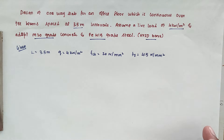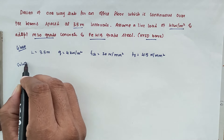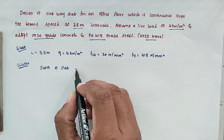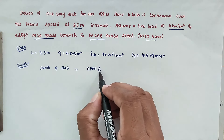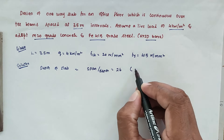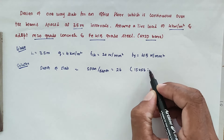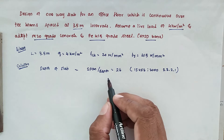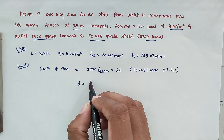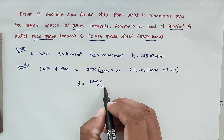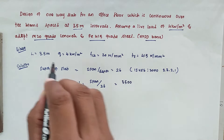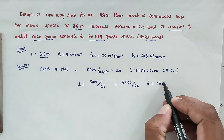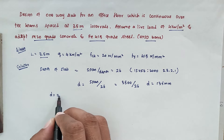Now we have to find the depth of slab. First, depth of slab: assume span by depth equal to 26, as per IS 456:2000 clause 23.2.1. So effective depth D equals span divided by 26, that is 3500 mm divided by 26, giving D equal to 135 mm. Rounding off, we take D equal to 140 mm.